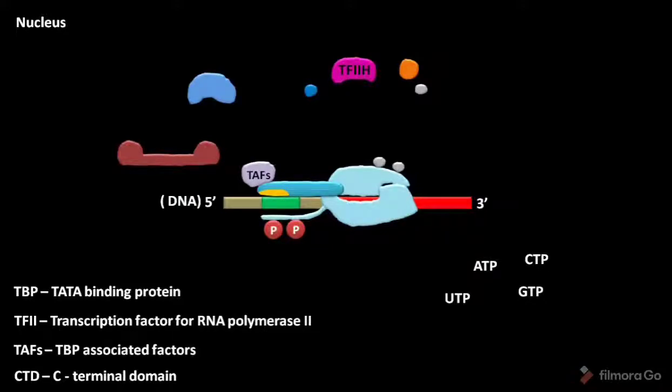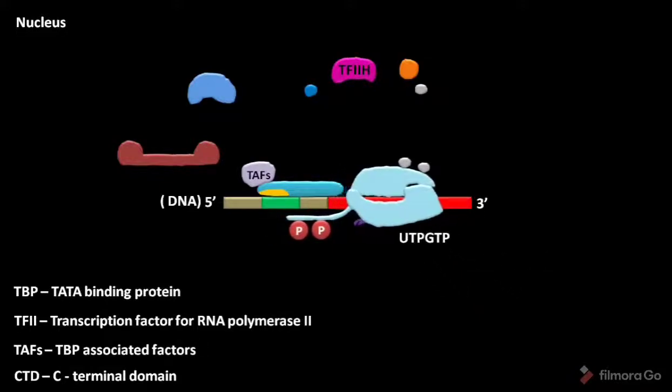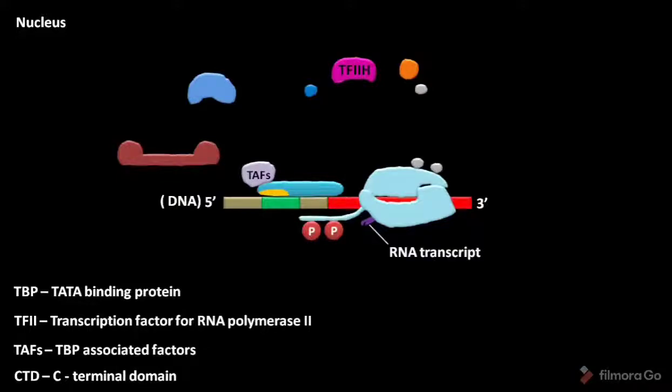Then with the use of ATP, CTP, UTP, and GTP, RNA polymerase II starts the elongation of RNA transcript.